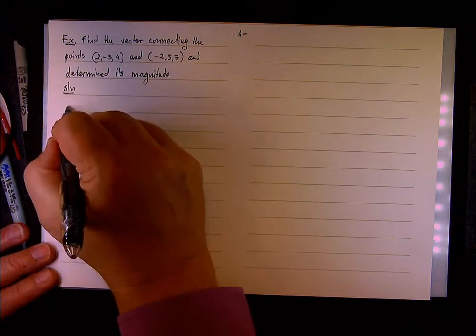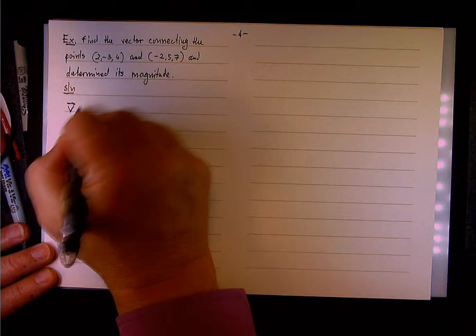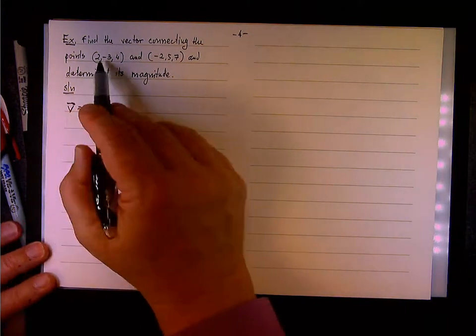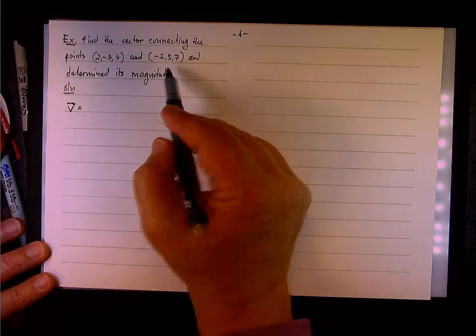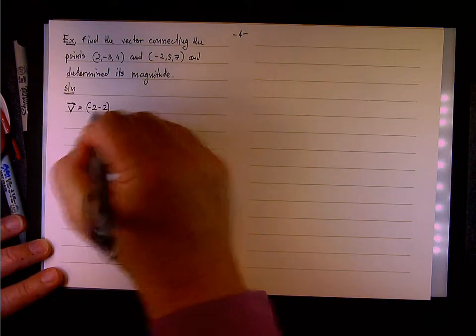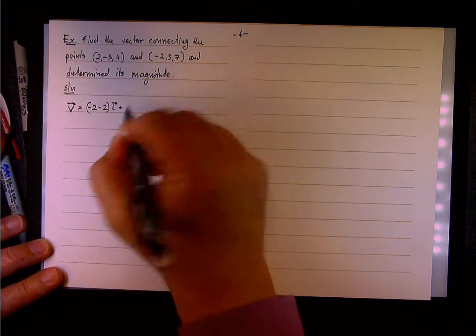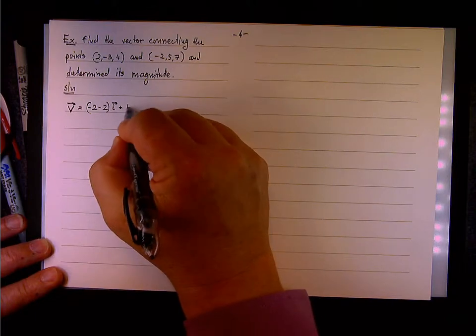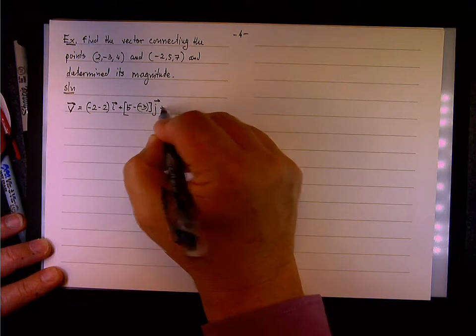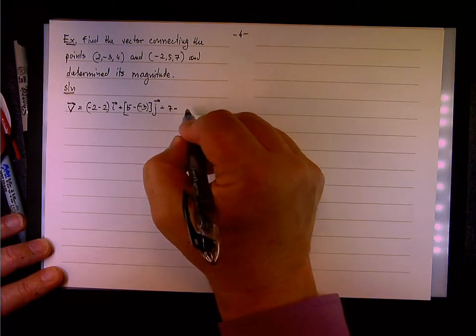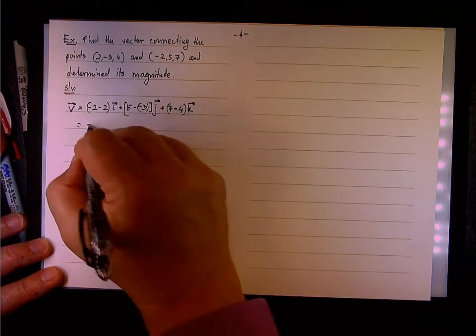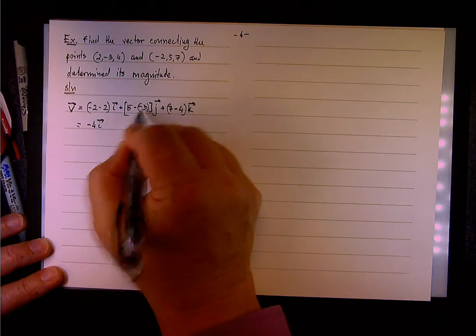So the solution, we're going to let the vector, in this case v, be, if we use the i, j, k notation, then vector v would be, if we let the first point to be x₁, y₁, z₁ and the second point b, x₂, y₂, z₂, then we're going to subtract. So we have (-2 - 2)i, and then plus (5 - (-3))j, plus (7 - 4)k.